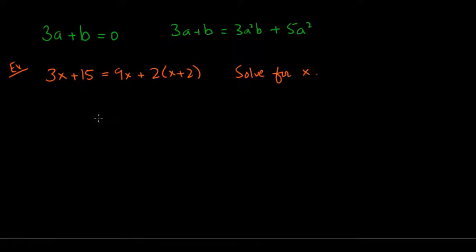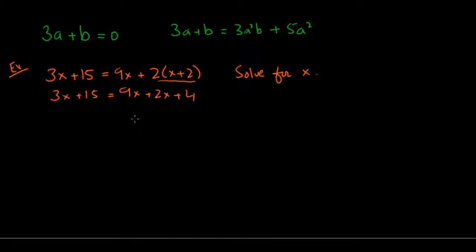First, let's expand out this term by multiplying the 2 outside with each of the terms inside. So 3x plus 15 stays the same; equals 9x, then 2 times x gives 2x, and 2 times 2 gives 4. On the right side, 9x and 2x are like terms, so I can add them to get 11x. So I have 3x plus 15 on the left and 11x plus 4 on the right.